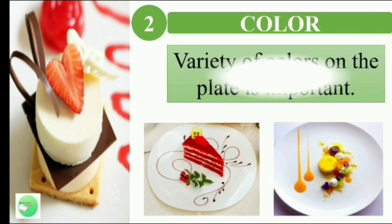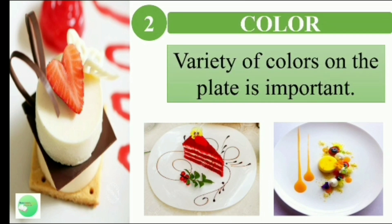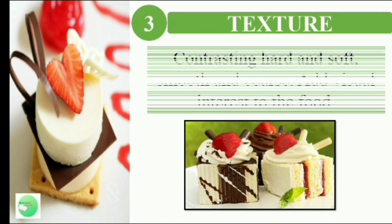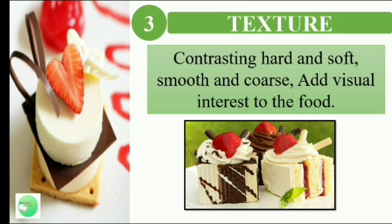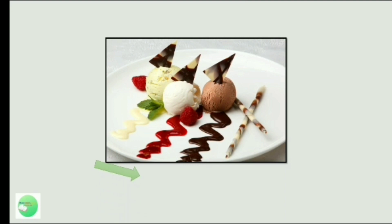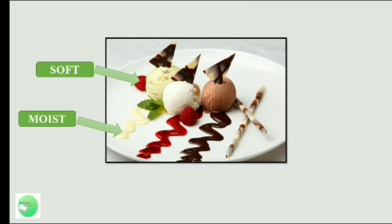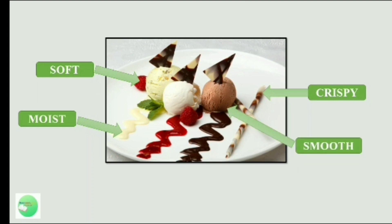Number 2, color. A variety of colors on the plate is important. Always consider color in plating dessert — food becomes more appetizing when it is colorful and well-presented. Number 3, texture. Contrasting hard and soft, smooth and frothy textures add visual interest to the food. Texture should be contrasting: there should be soft, moist, crispy, and smooth elements. Don't forget each of these guidelines.